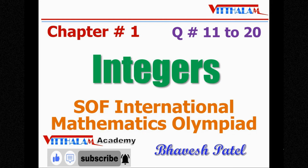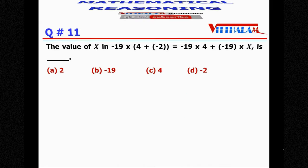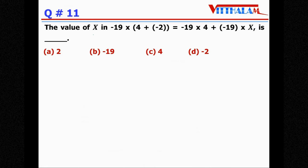So let's solve one by one, section mathematical reasoning question number 11. The value of x in minus 19 multiplied by (4 plus minus 2) equals to minus 19 into 4 plus minus 19 into x.